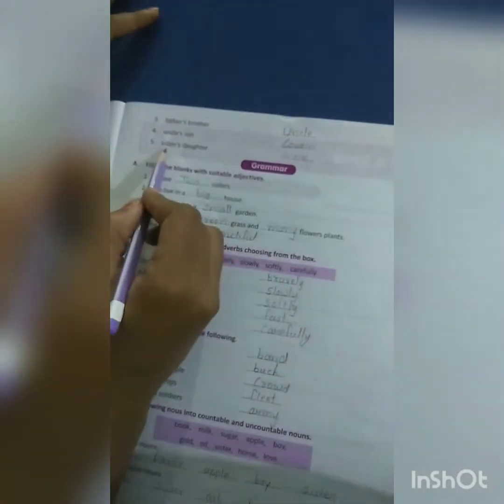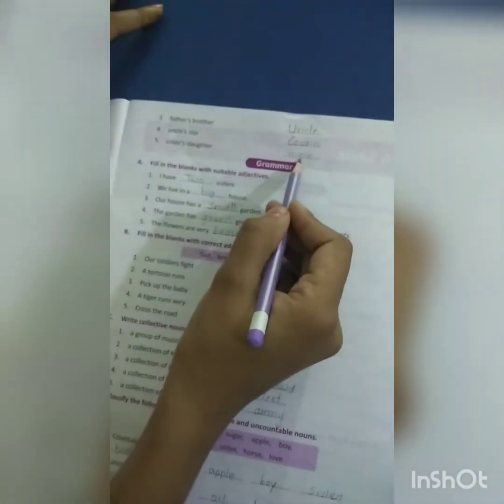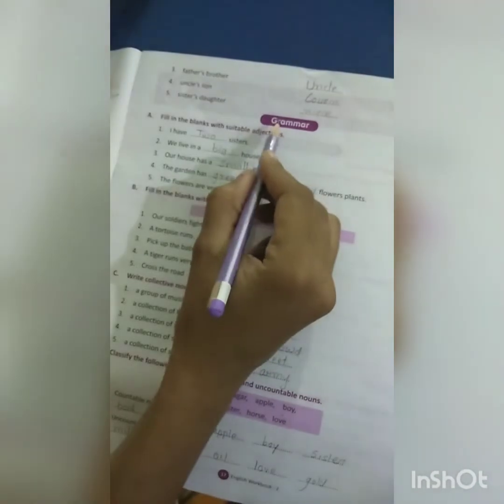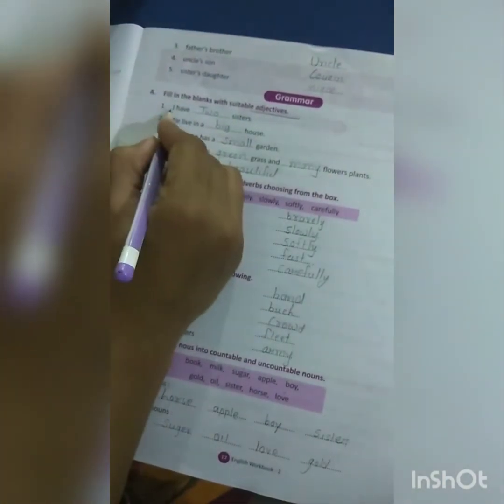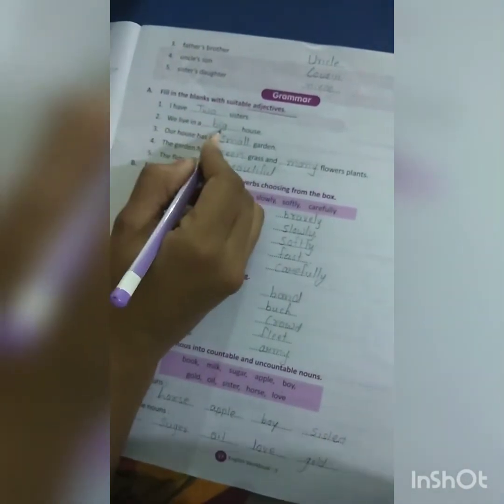Turn to the grammar. Part A: Fill in the blanks with suitable adjectives. First number: I have two sisters. We live in a big house. Our house has a small garden.